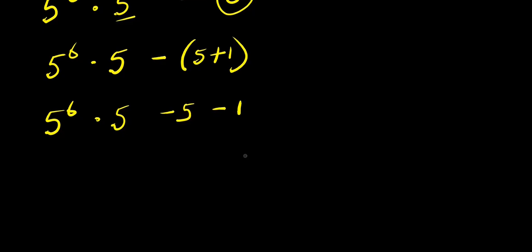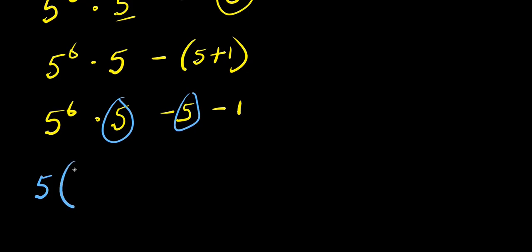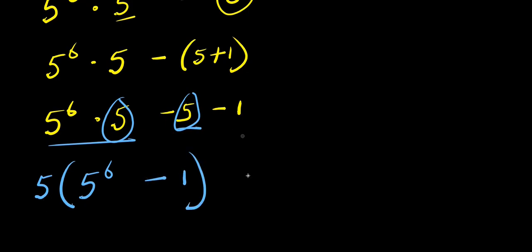At this particular point, we can easily factor out 5 because there is 5 here and there is 5 here. So I have 5 outside the bracket. This divided by 5 is 5 to the power of 6. Then I bring down the minus 5 divided by 5, that is 1. And we have minus 1 outside the bracket.